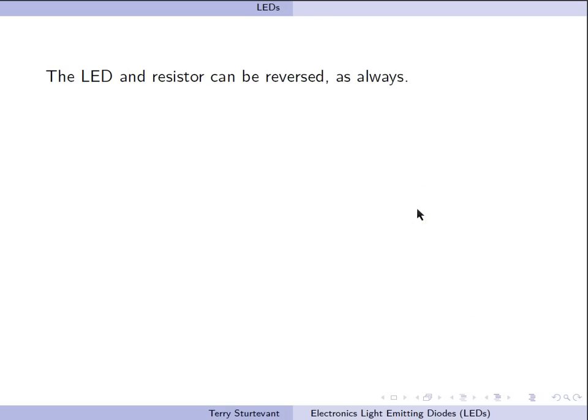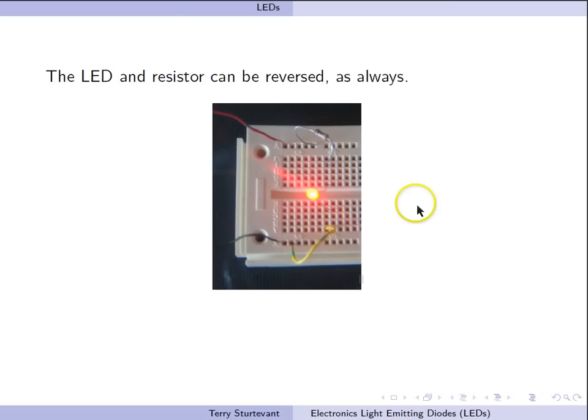Again, we can reverse the position of the LED and the resistor, and it still works. So now our resistor goes from power to this row. Our LED jumps across the trough. And now from the cathode of the LED, we have our signal, which when it goes to ground, lights up the LED.